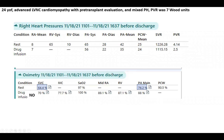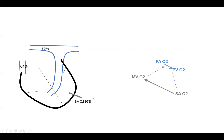I found she had a left-to-right shunt with over 8% step up between SVC and PA. Quick math: QPQS is 97% minus 64 divided by 97 minus 76, which is 33 divided by 21 — approximately 1.5. So she had a shunt of 1.5.